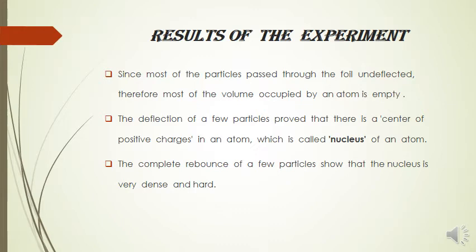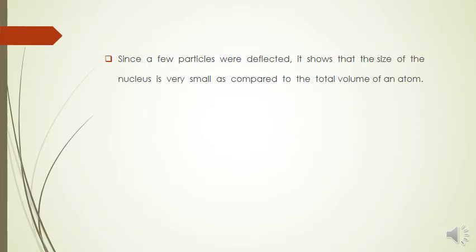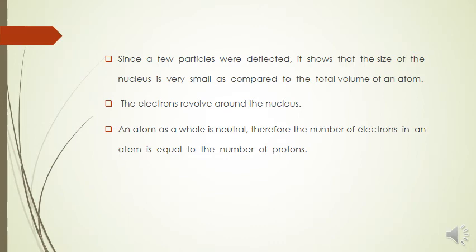The next point is since few particles were deflected, the nucleus is very small as compared to the total volume of an atom, which is also confirmed because the nucleus occupies only the center position of an atom. The other point is the electrons revolve around the nucleus. This is confirmed because when alpha particles moved near the nucleus, they deflected, showing electrons are moving around.